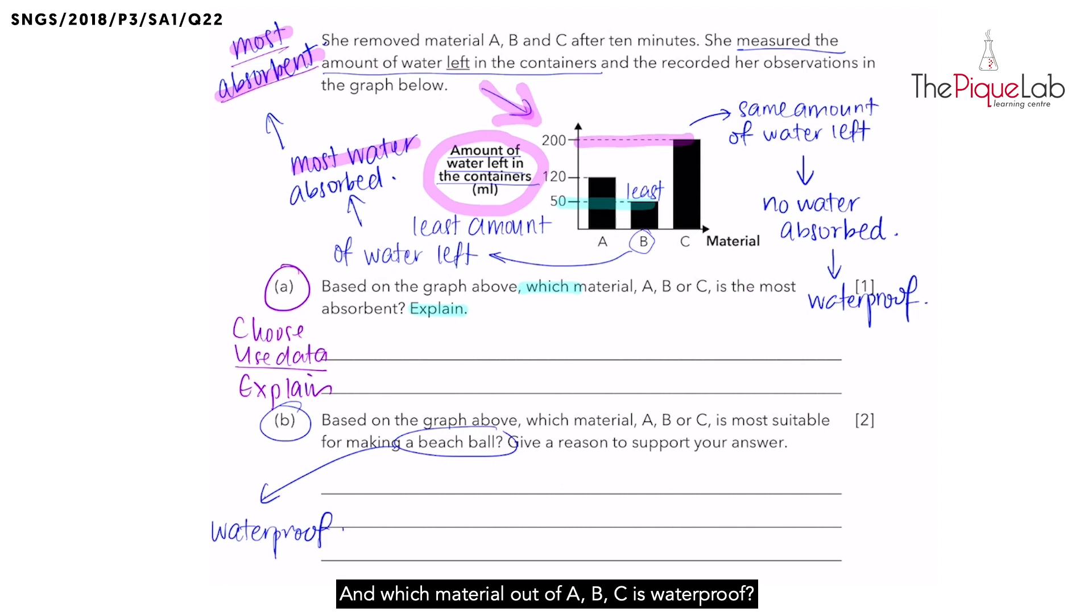And which material out of A, B, C is waterproof? It is material C. And once again, we can apply CUE for this question as well. Let's choose first. We choose material C. Next, we need to use the data. So same as earlier, look at the graph and use the exact words in the graph. The amount of water left in the container with material C remains the same.